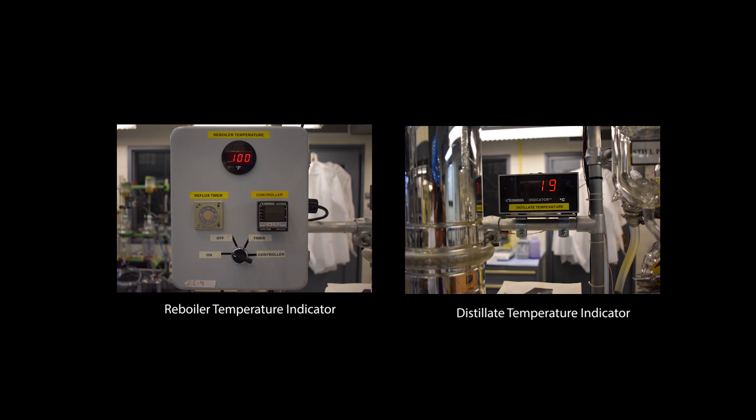There are two main temperature indicators in the batch distillation column. The first is the reboiler temperature indicator which indicates the temperature of the bottom's product. Next is the distillate temperature indicator which indicates the temperature of the distillate being condensed.